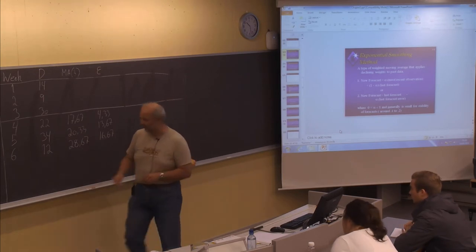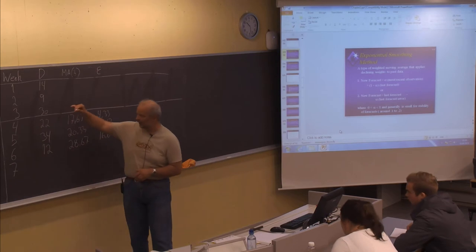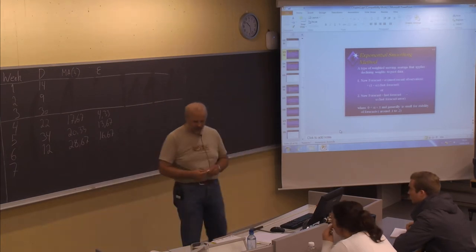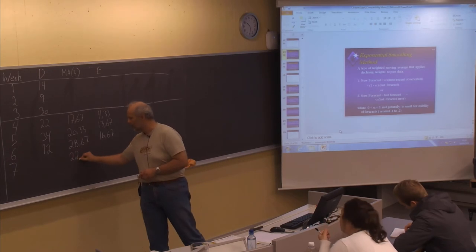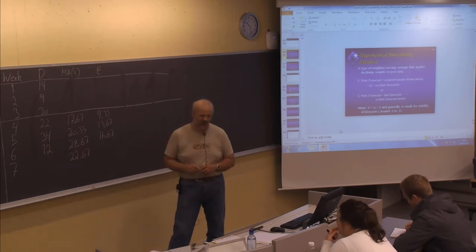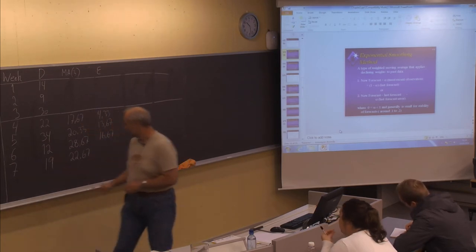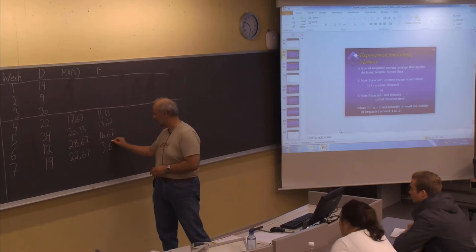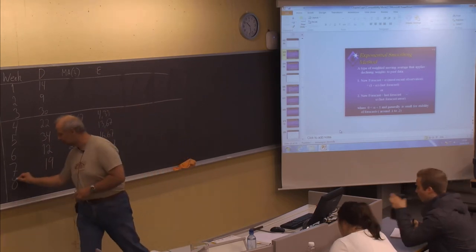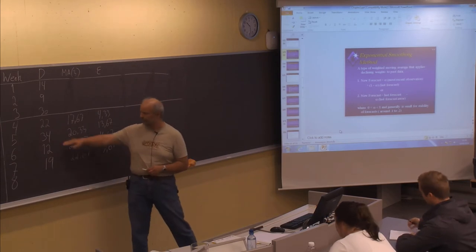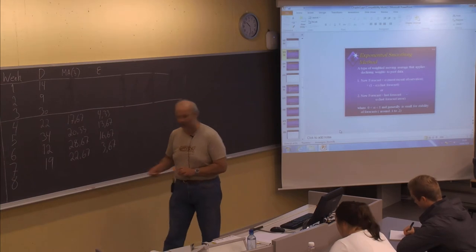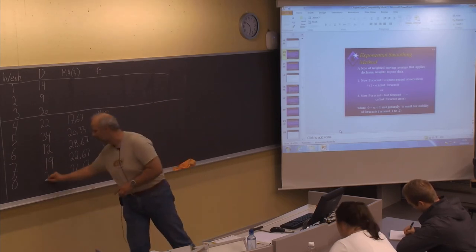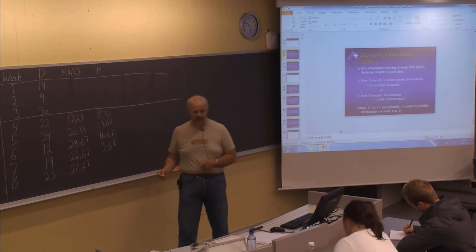We can continue. In period number seven, the forecast is the average of the three latest numbers — 22, 34, and 12 — giving 22.67. The actual demand turns out to be 19, and the forecast error will be 3.67. For the last period, number eight, the average of 34, 12, and 19 gives 21.67. The demand turns out to be 23, and the forecast error will be 1.33.